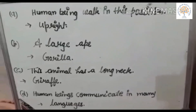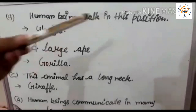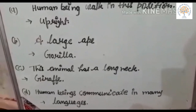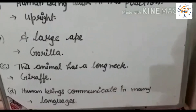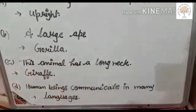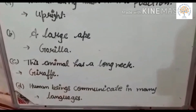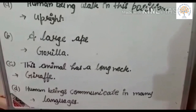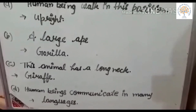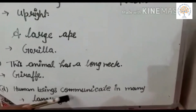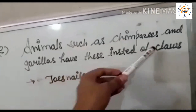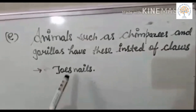Now let's do some practice work. Human beings walk in an upright position — meaning they stand erect with their arms by their sides. A large ape is the gorilla. The animal with a long neck is the giraffe. Did you know a newborn giraffe is about 1.8 meters, or 6 feet tall, and can run up to 52 km per hour just one hour after its birth? Human beings communicate in many languages. Animals such as chimpanzees and gorillas have nails instead of claws.